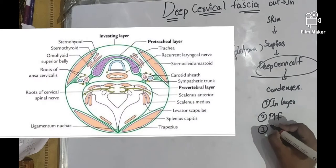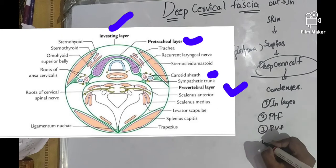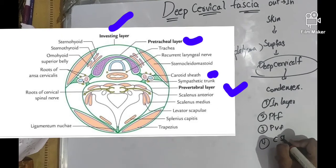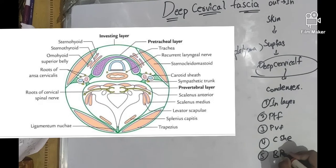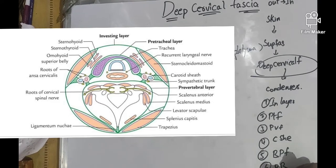Prevertebral fascia, carotid sheath, bucopharyngeal fascia, and pharyngobasillar fascia.